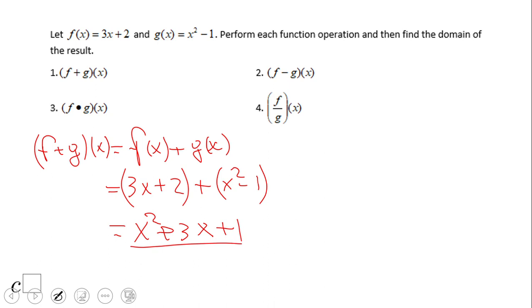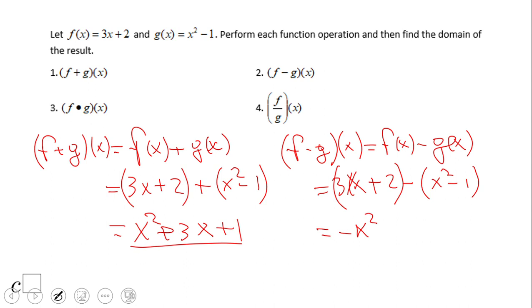What about f minus g? f minus g of x is going to be f of x minus g of x. In this case we have 3x plus 2 minus x squared minus 1. Here you really need parentheses, at least for the second part. What do we have? We have negative x squared, and then we have plus 3x, and positive 2 minus negative 1 is positive 3. This is f minus g of x.